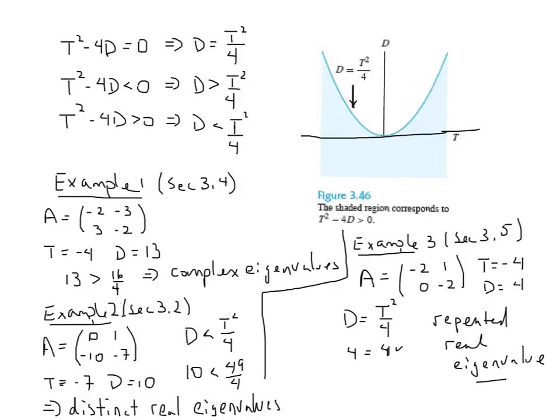And finally, in example 3, that I took from section 3.5, where we saw repeated eigenvalues, this will be a case of repeated eigenvalues. The trace is -4. The determinant is positive 4. And sure enough, D is equal to T²/4. The results of this matrix says that we live on this curve, and so we know it will be a situation of repeated eigenvalues. Repeated, and of course, real.